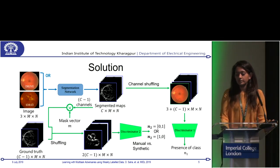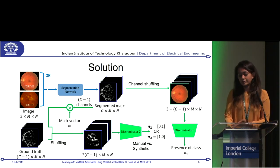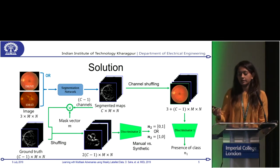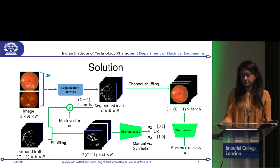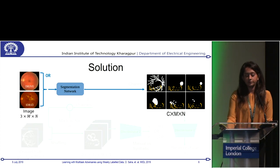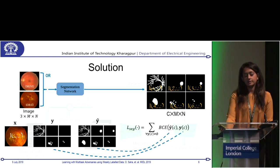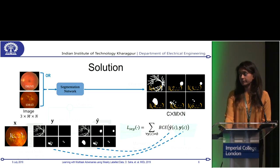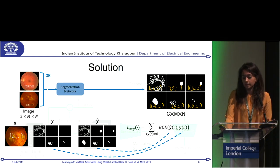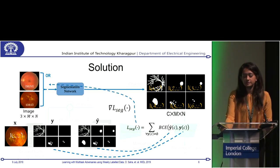Discriminator 1 outputs a six-length one-hot vector N1, where we have six classes: two anatomies and four diseases. It should output one if that class is present in the dataset, irrespective of the annotations. The first loss for the segmentation network is BCE loss, where Y-hat is the segmented maps from the segmentation network and Y is the ground truth. I calculate BCE only for those channels where the ground truth is not null — for example, in DRIVE I don't have the optic disc marked, so I won't calculate loss for that class. This loss is then backpropagated through the segmentation network.